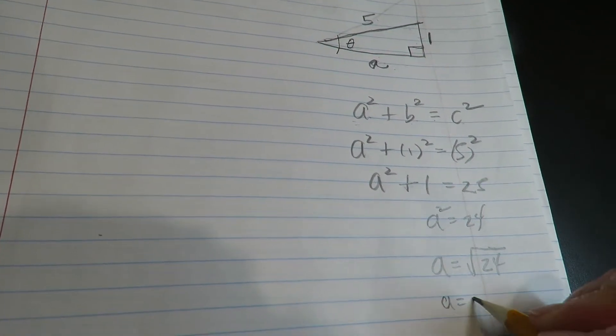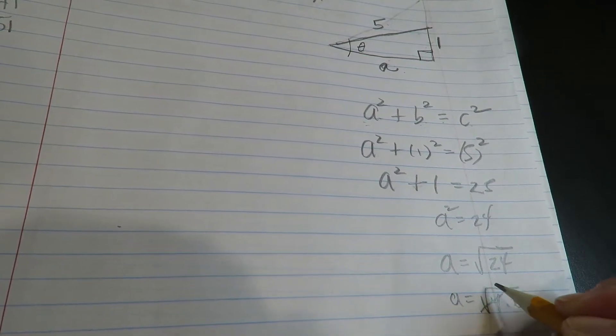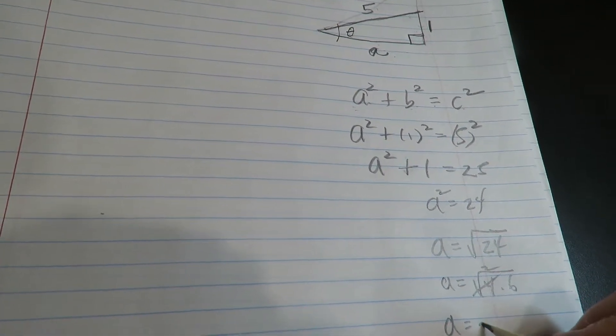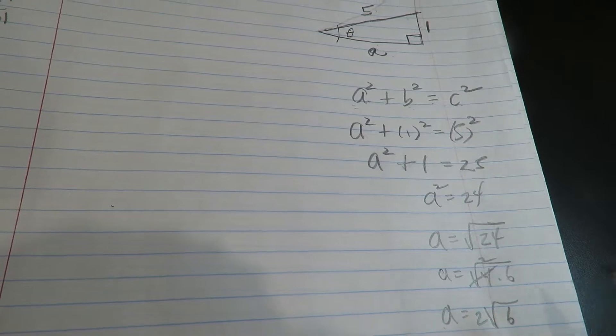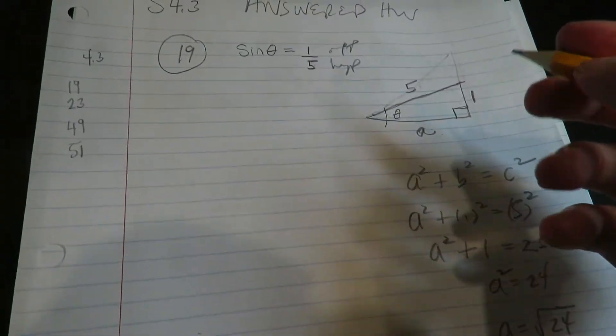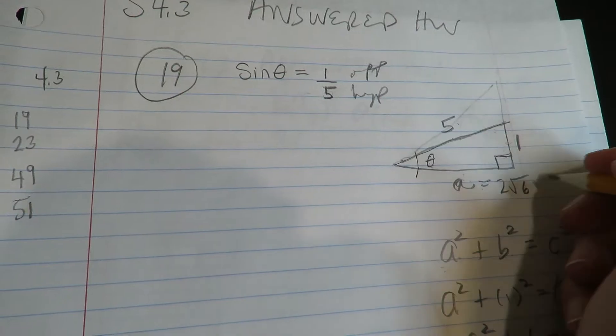All right, my brain and hand are working here. That's 4 times 6, so this is a 2. So this is 2 radical 6. All right, so this side is 2 radical 6.